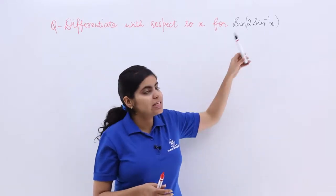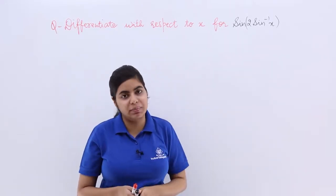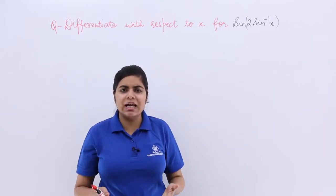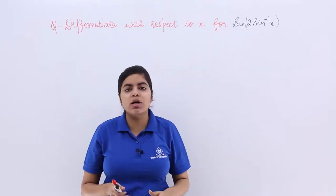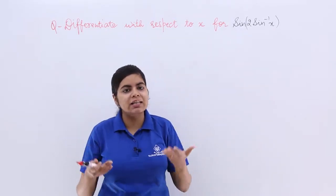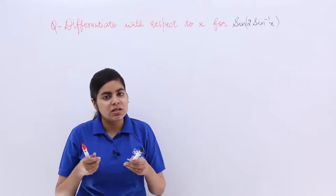Now had it been only sin inverse x, you know that the answer would have been 1 upon under root 1 minus x square. But this time it's not only sin inverse x and neither it is only sin x, because had it been only sin x the answer would have been cos x for the differentiation with respect to x. So how to do it?